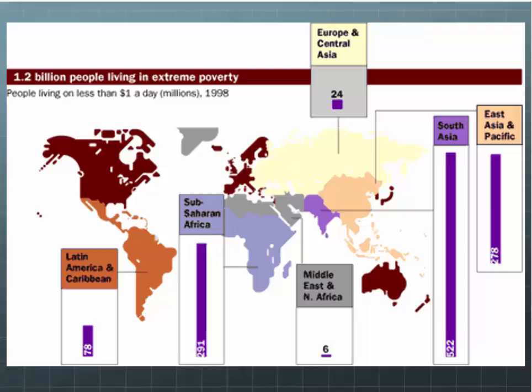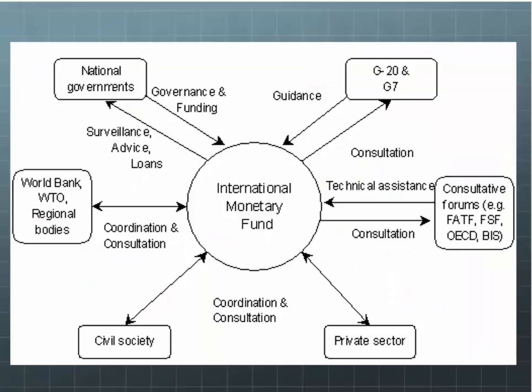World trade was about $57 billion in 1947, and that's going to rise to $7 trillion in 2001. After World War II a series of international organizations were created to lay the foundations for post-war globalization — including the International Monetary Fund and the World Bank. This was decided in 1944 in Bretton Woods, New Hampshire, and became known as the Bretton Woods system.